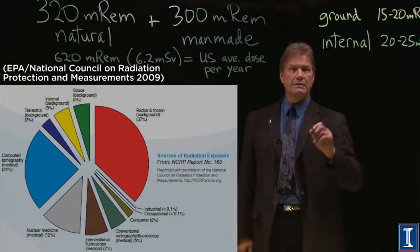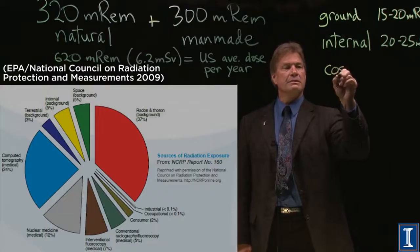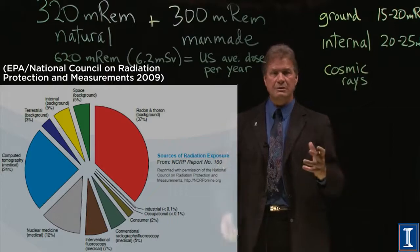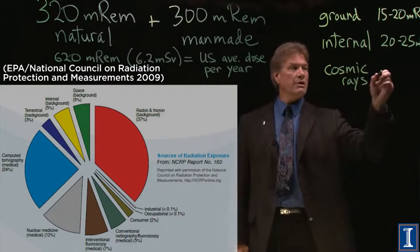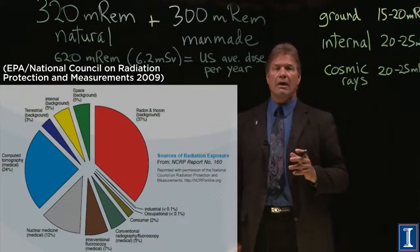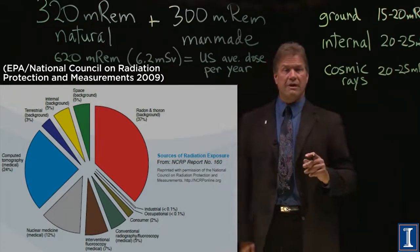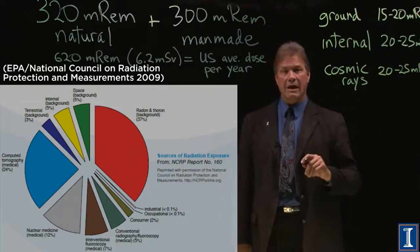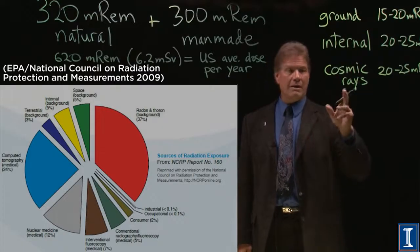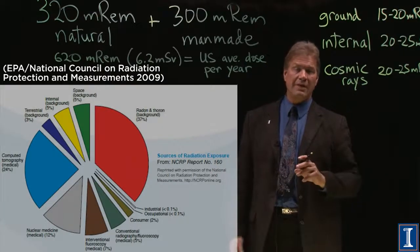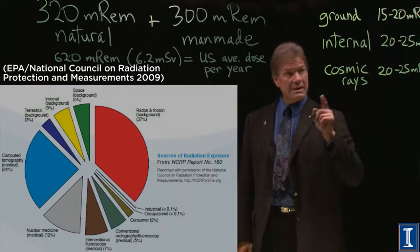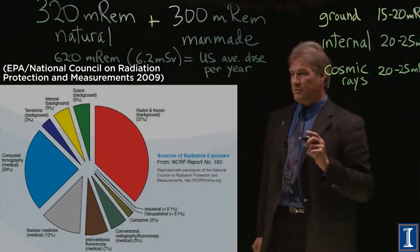The green slice is from outer space — cosmic rays, things left over from the Big Bang and from stars exploding, constantly bathing the Earth. This is also 20 to 25 millirem per year. You really can't get away from this stuff: if you didn't have the potassium in you, you'd die; you have to live on the Earth; and there's no way to escape cosmic rays. These sources don't add up to the whole 320 millirem for natural dose.